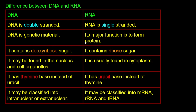DNA is a genetic material. RNA is also genetic material — RNA is involved in protein synthesis, producing proteins in the body. For example, RNA viruses use RNA as their genetic material.